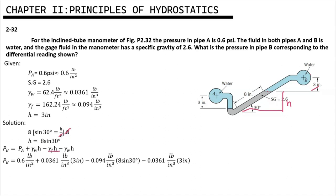So, plug in all the values. Point A is 0.6 pounds per square inch plus 0.0361 pounds per cubic inch times the height which is 3 inches